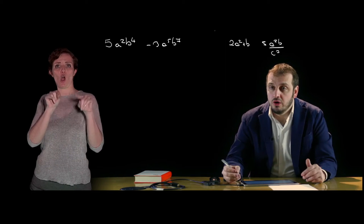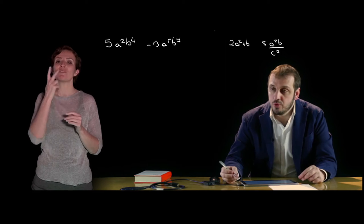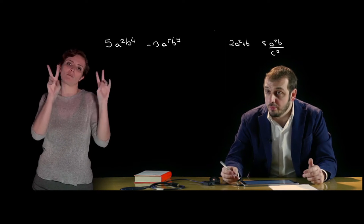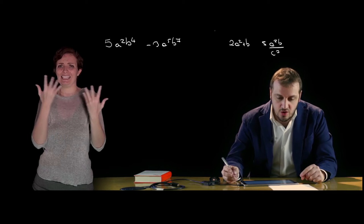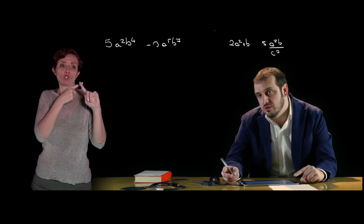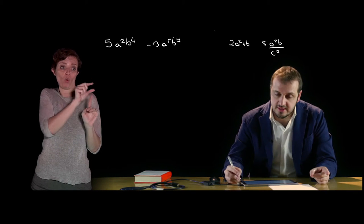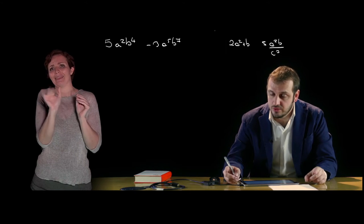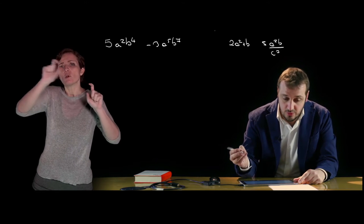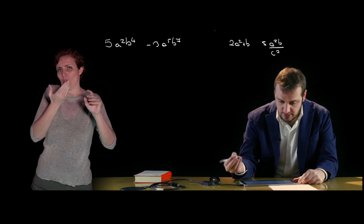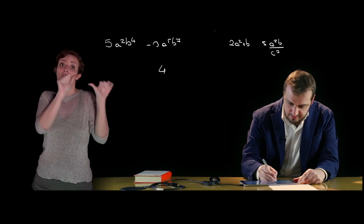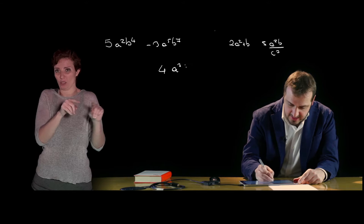Andiamo subito a vedere come si può ridurre un monomio a forma normale, quindi qual è la forma normale di un monomio. Un monomio si dice ridotto a forma normale quando è scritto come prodotto fra un numero e una o più lettere, tutte diverse tra di loro, con eventuali esponenti. In questo monomio ridotto a forma normale noi avremo quindi un coefficiente ed una parte letterale.